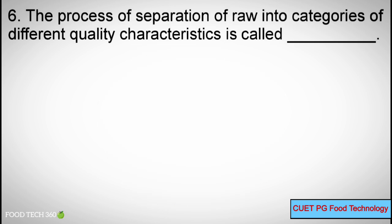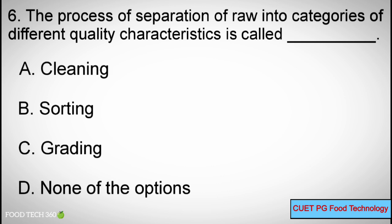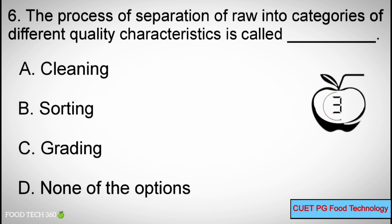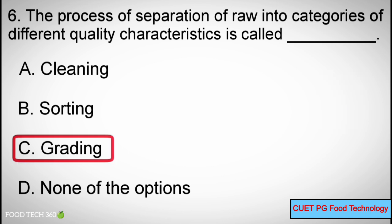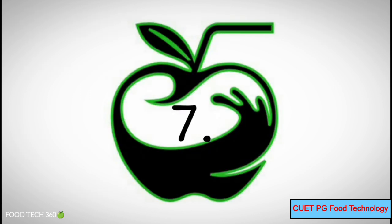Question number 6. The process of separation of raw materials into categories of different quality characteristics is called dash. Options A: Cleaning, B: Sorting, C: Grading, D: None of the options. Correct answer: C, Grading.